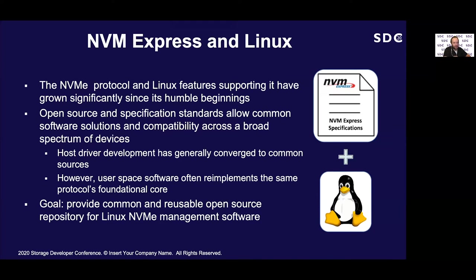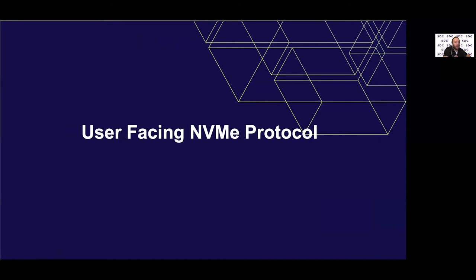The software occupying user space often re-implements various subsets of the specification in fragmented implementations. It's not just the specification either — the Linux driver has also evolved to become more complex, and there's been quite a bit of duplication in user space software to reach all those features. The primary goal for LibNVMe is to provide a common place to expose all the NVMe features provided by Linux and the devices running on this operating system, focusing on what a Linux user can observe.